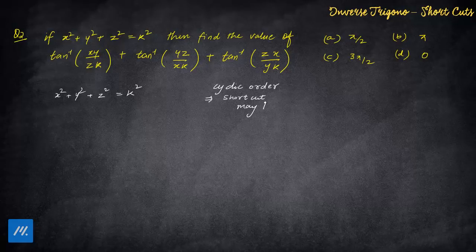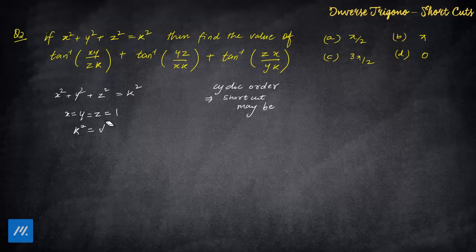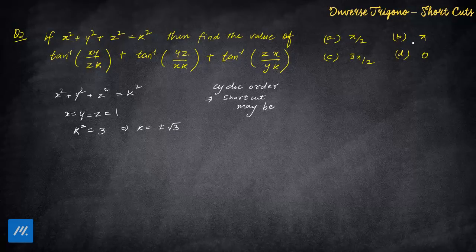The shortcut may be applied — using the word 'may' repeatedly intentionally. The answer is not dependent on the specific values of x, y, z for k, so we can put equal values. If we put x = y = z = 1, the calculation becomes very simple and k² comes out to be 3, meaning k = ±√3. Try the positive value first — if the answer matches, no need to try negative.